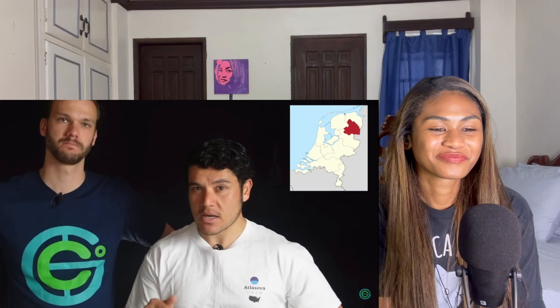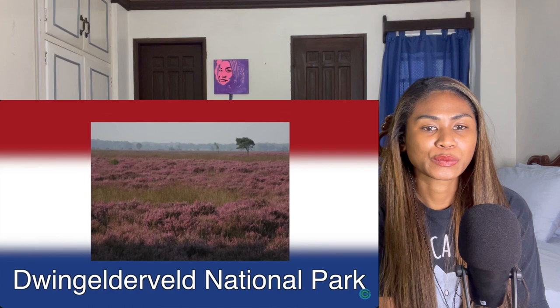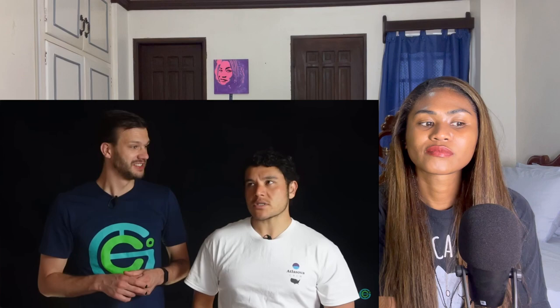The first province is Drenthe, and the capital is Assen. This province has the lowest population density and the lowest GDP per capita, so it kind of flies under the radar. But it really shouldn't, because it has some very ancient sites like the Hunebedden burial mounds — some over 5,000 years old. They also have a large national park with heathland, one of the largest in Western Europe. Assen is also known for its famous racetrack.